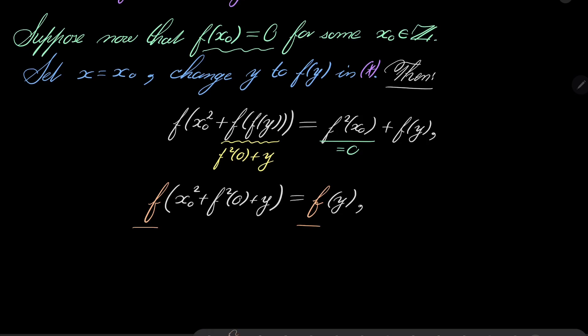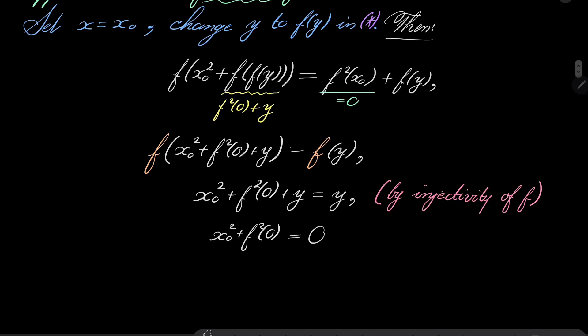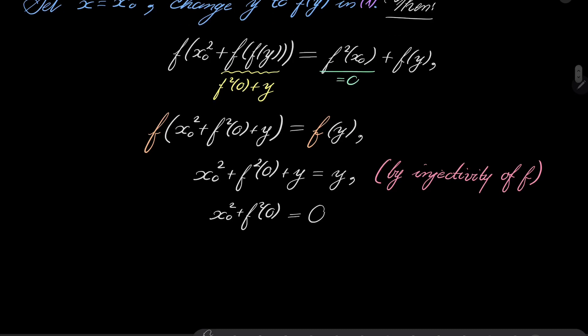Now, our function is injective, so we can cancel this outer occurrence of our function f. So by injectivity of f, we have x0 squared plus f squared of 0 equals 0. And now we know, since we are dealing with real numbers, both of these numbers must be 0. In particular, this already implies that x0 equals 0.